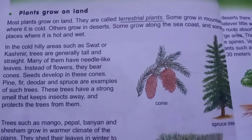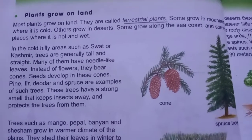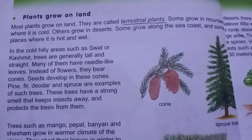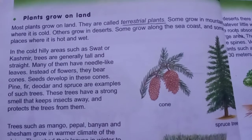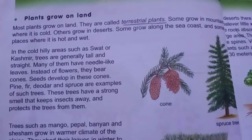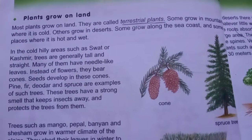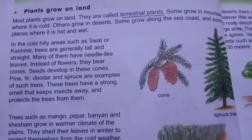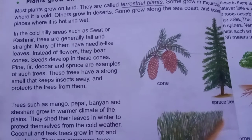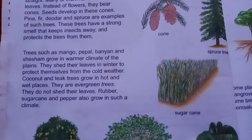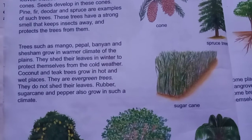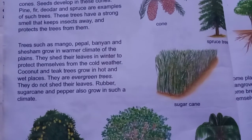Land کی وہ places جہاں climate تھوڑا گرم رہتا ہے وہاں کے plants evergreen plants کہلاتے ہیں۔ کیونکہ ایسے plants cold weather میں اپنے leaves گرا دیتے ہیں۔ ان کی examples میں mango tree، peepal tree، banyan tree اور shisham وغیرہ آتے ہیں۔